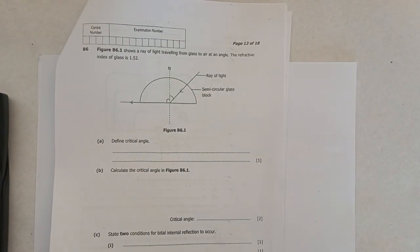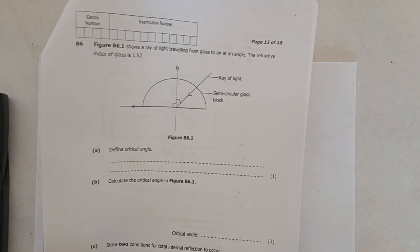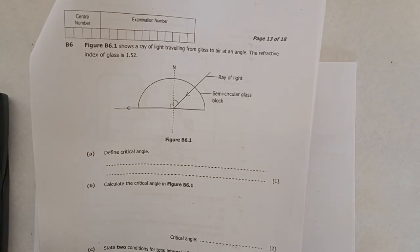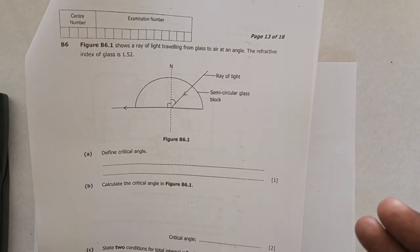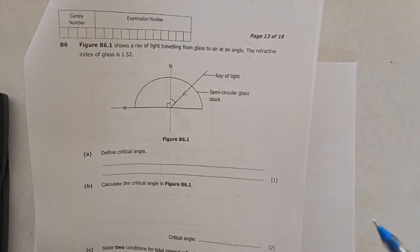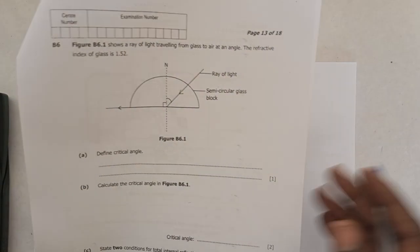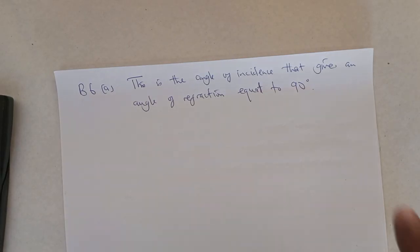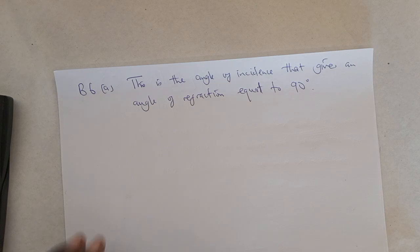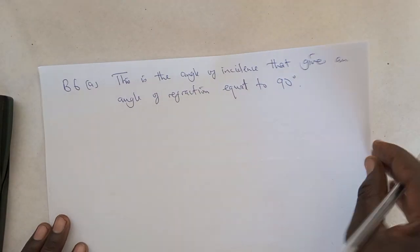Let me rephrase that statement. The critical angle is the angle of incidence of a ray of light traveling from a denser medium to a less dense medium, for which the angle of refraction is equal to 90 degrees. That is what we call the critical angle — a situation where the ray of light travels from a denser medium to a less dense medium and the angle of incidence makes the angle of refraction equal to 90 degrees.